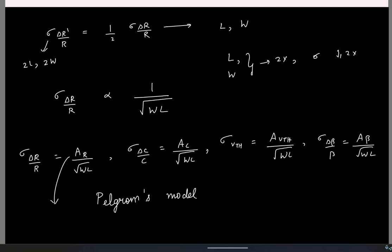One last point on units. The coefficient A_R is unit-less normalized by R, and since sigma(delta R/R) is dimensionless while sqrt(WL) has units of micrometers, A_R has units of micrometers. For threshold voltage, since sigma(delta Vth) is not normalized, A_Vth has units of volt-micrometers. We will stop here.